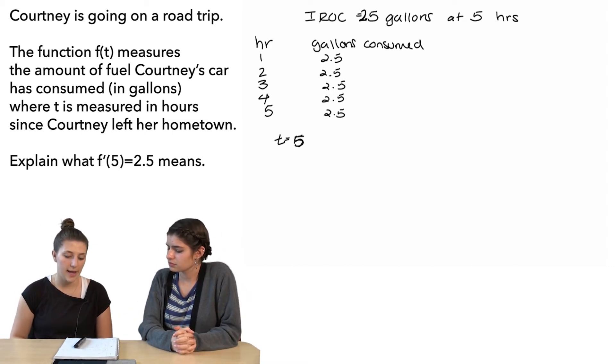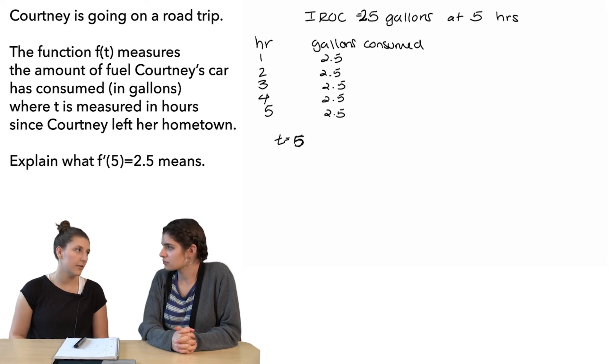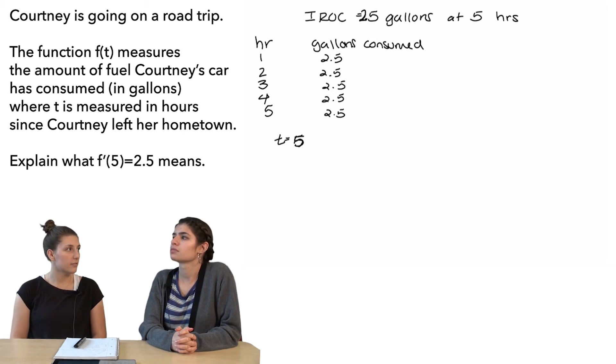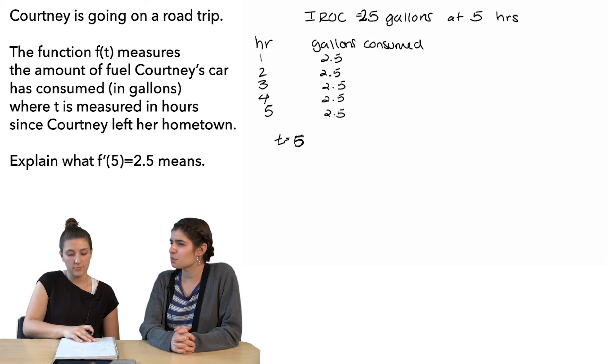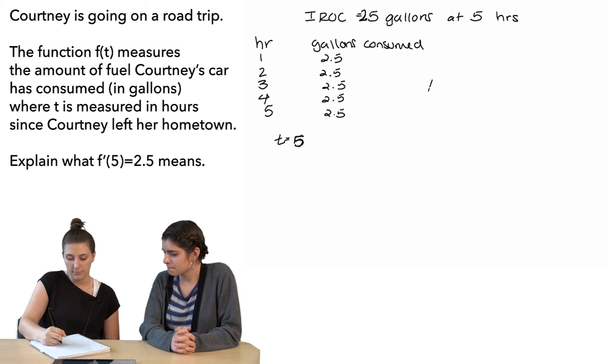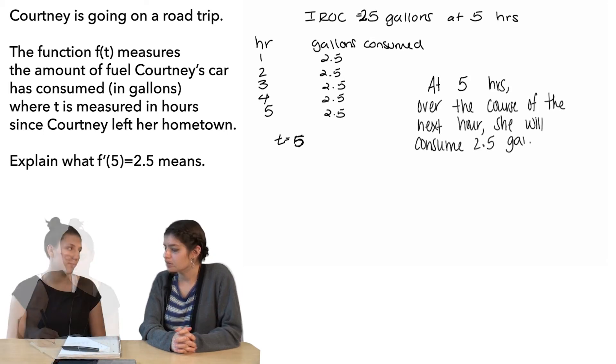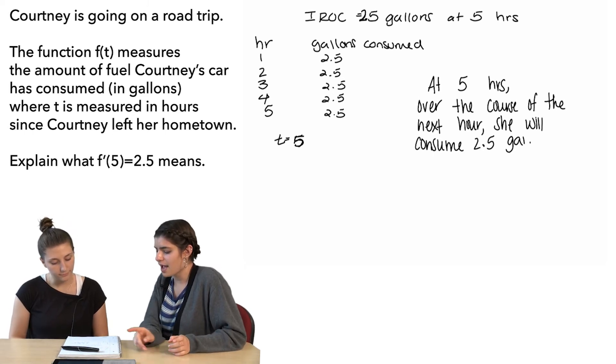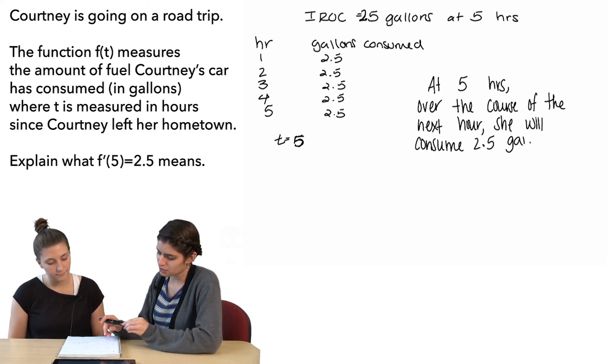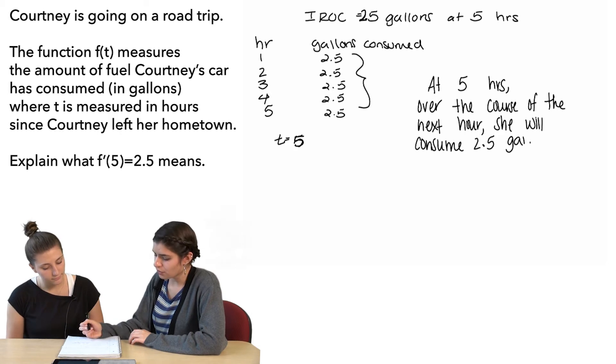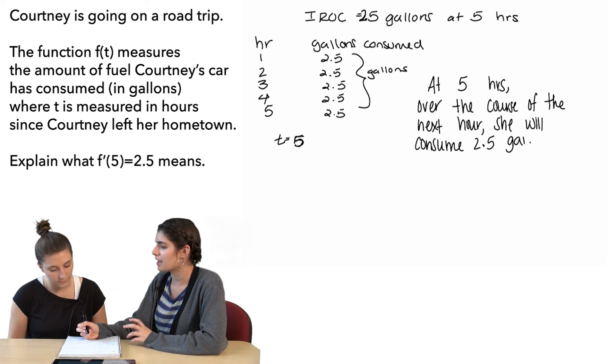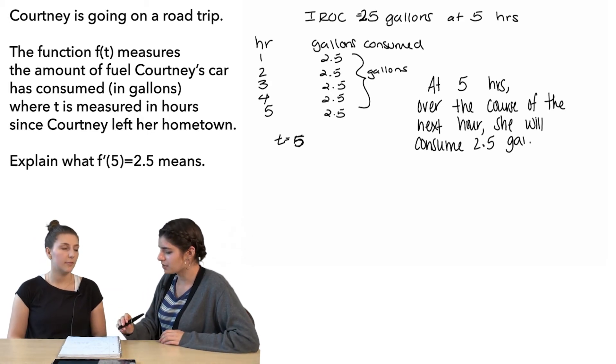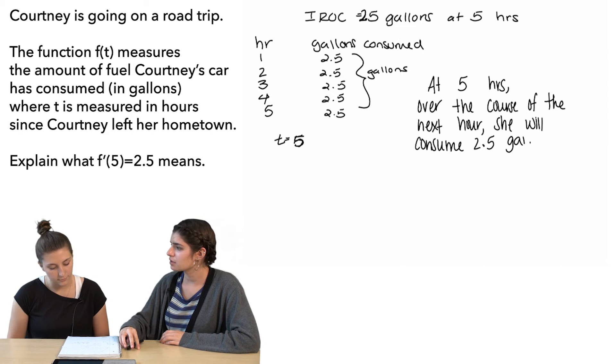So maybe at 5 hours, for the next hour that she travels, she will consume 2.5 gallons? Okay. Okay, thanks. I think that explains it pretty well. Gallons? Yes. And that also makes sense because I feel like for our last guess, when we were concerned about the gallons consumed overall, our answer would have been in just gallons and not gallons per hour, which I think is the rate that we want in the end. Right. Which we do have with your description. Yeah.